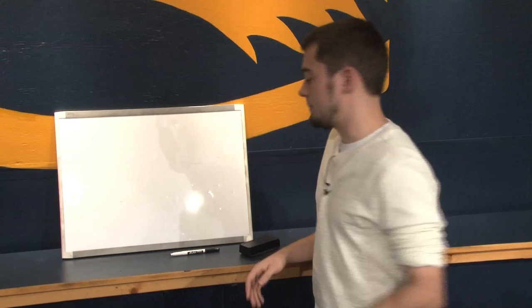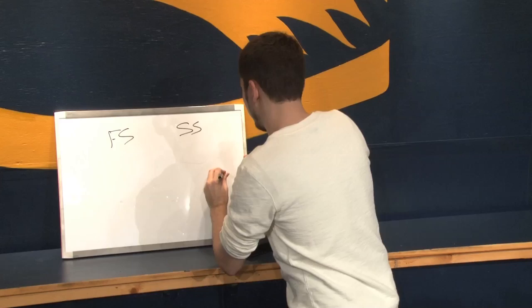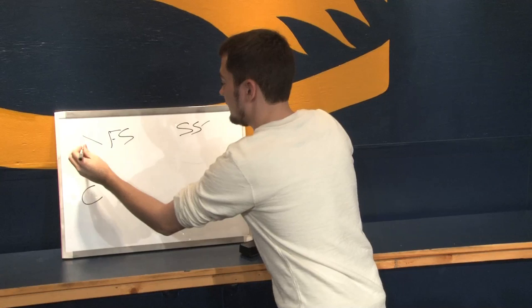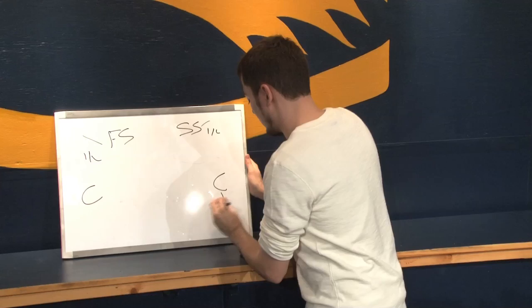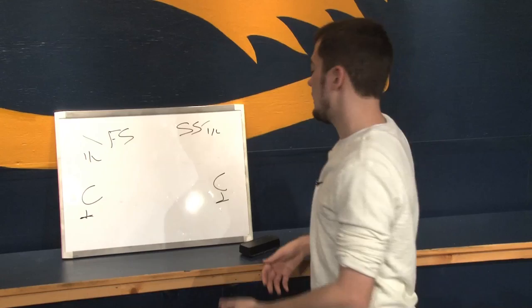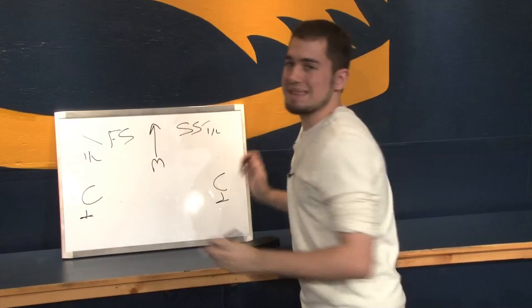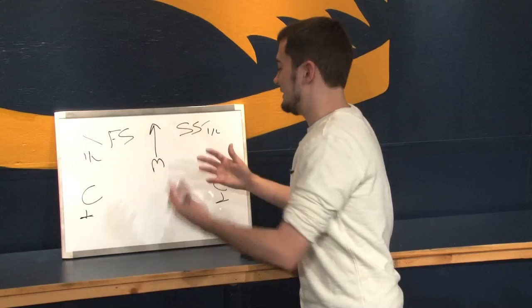Cover two — a two-high shell with the free safety and strong safety. Going back to Bud Carson and the Steelers, they really helped create cover two and the Tampa two. The strong safety and free safety both have the deep half. The cornerbacks in true cover two are rolled up, playing the flat, rerouting and jamming at the line to throw off the timing of the route. In Tampa two, the middle linebacker needs a lot of depth — usually 15 to 20 yards — to cover that deep middle, so you need a really athletic Mike linebacker. That's the more extreme, true Tampa two.